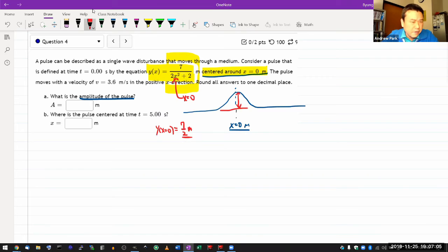And when it asks where is the pulse centered at time t equals five seconds, you go back to—oh, it's moving at speed of 3.6 meters per second in the positive x direction, so you plug in, so you calculate the distance.